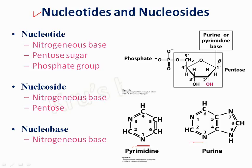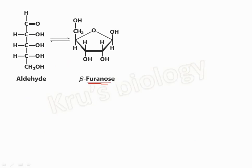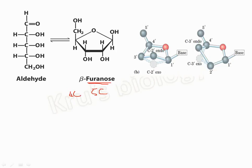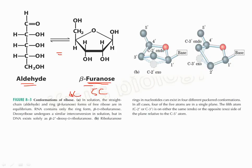The structure of a nucleotide includes a nitrogenous base, a pentose sugar, and a phosphate group. A nucleoside contains only the nitrogenous base and pentose sugar without the phosphate group. The ribose sugar mainly exists in the beta-furanose form. Furanose refers to a five-carbon membered ring structure, while pyranose refers to a six-carbon membered ring system. In solution, the aldehyde and beta-furanose forms of free ribose are in equilibrium.